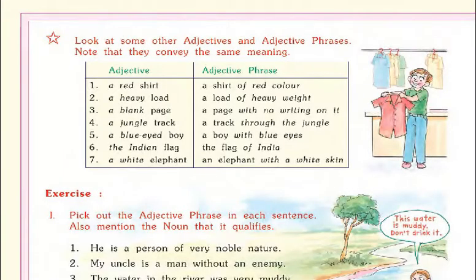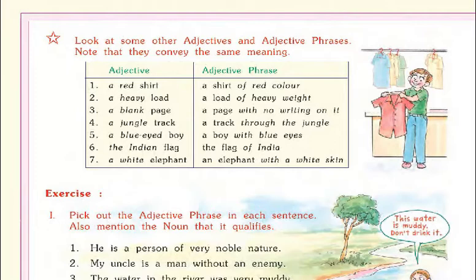Now look at some other adjectives and adjective phrases. Note that they convey the same meaning. First: 'a red shirt' — adjective phrase: 'a shirt of red color.' Second: 'a heavy load' — adjective phrase: 'a load of heavy weight.' Third: 'a blank page' — adjective phrase: 'a page with no writing on it.' Fourth: 'a jungle track' — adjective phrase: 'a track through the jungle.'